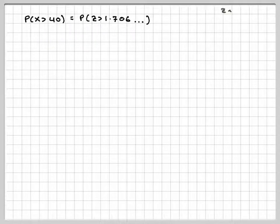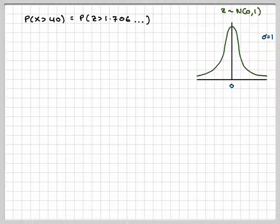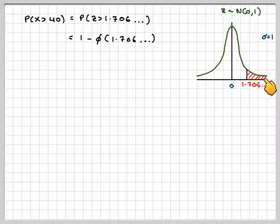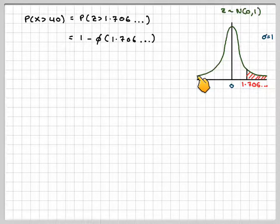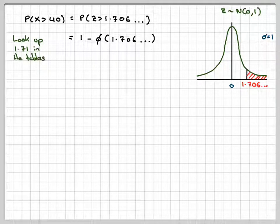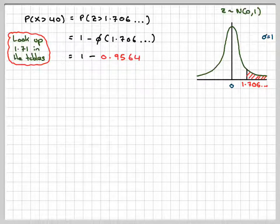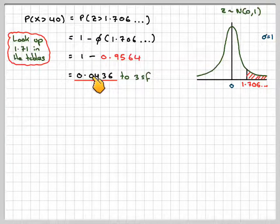Just write that down again. I like to draw the diagram, so this is 0, the standard deviation is 1, 1.706 is over here. Draw a line there, and we shade that area, and we're finding that probability. So from the tables, we'll need to do 1 minus this bit. If we look up in the tables at 1.71, we're going to get 1 minus 0.9564, which is 0.0436 to three significant figures.